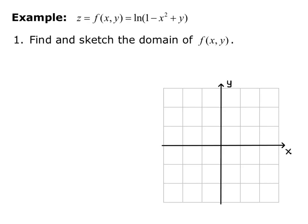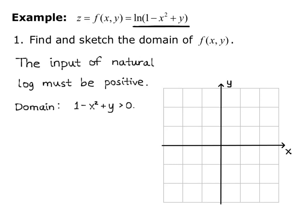Now let's look at the type of function. We have a natural log function, and we know that the input of natural log must be positive. Since the input is 1 minus x squared plus y, we have that the domain is 1 minus x squared plus y is strictly greater than 0.